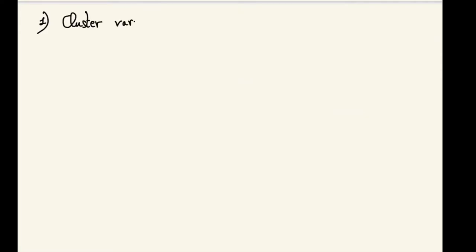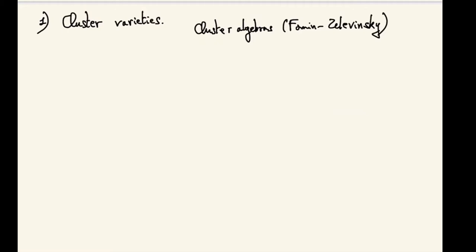I will start by saying a few words about cluster varieties. They are algebraic varieties coming from the study of cluster algebras, a model space introduced by Fomin-Zelevinsky with a representation-theoretic motivation. The geometric point of view on cluster varieties is roughly due to Fock and Goncharov, where the motivation is related to the study of moduli spaces of local systems on topological surfaces. In this talk I will not really care about motivation from representation theory; I will just look at cluster varieties themselves.